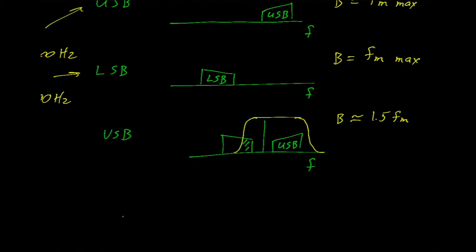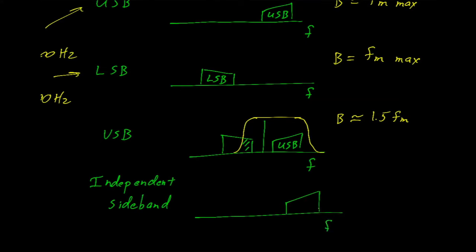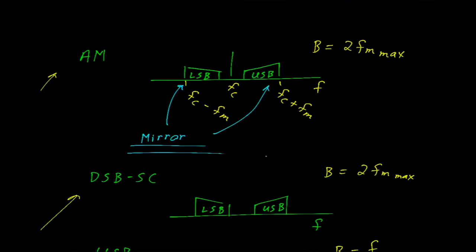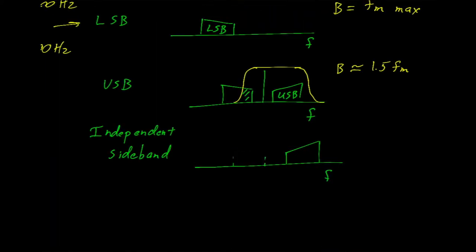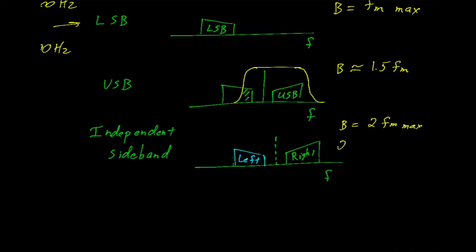The last method is called independent sideband. In the frequency domain we still have two sidebands. Going back to traditional AM, the sidebands were mirrored — the same information was contained in the upper sideband as in the lower sideband. That's not true with independent sideband. Rather than sending mirrored images, we send different information in each one. For example, if this were stereo, you could send the left channel on one sideband and the right channel on the other. There may or may not be a carrier, giving us a bandwidth equal to two times the maximum modulating frequency — but with two times the information.